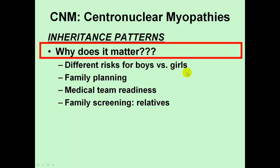For example, if she were pregnant with a girl and has a family history of specifically X-linked myotubular myopathy, the girl would not be at risk for developing full-blown X-linked myotubular myopathy, so the parents could have that reassurance. On the other hand, if she's pregnant with a boy and she herself is a carrier for X-linked MTM, there is a 50% chance that boy will have full-blown X-linked myotubular myopathy. Medical team readiness becomes important — delivering in a setting with an acute medical care team, because that child is likely to need aggressive medical management even within the first few minutes of life.